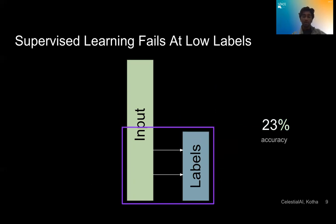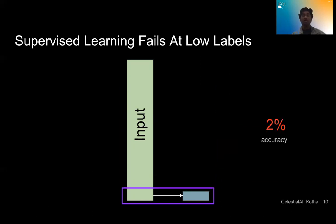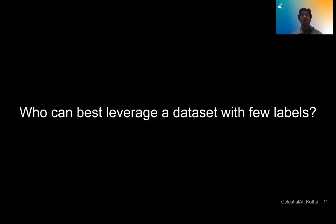As we take away more and more and more labels, our accuracy drops increasingly fast. And what happens at a very low amount of labels, we get no better than random guessing. Man, this is a huge problem. Who can best leverage a data set with few labels? These people will be able to learn the best about the data, and they'll be able to actually transform this into human leverageable insights.